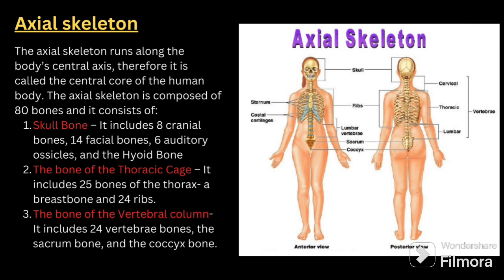The axial skeleton runs along the body's central axis, which is why it is called the central core of the human body. It is composed of 80 bones and consists of: skull bones — including eight cranial bones, 14 facial bones, six auditory ossicles, and the hyoid bone; the bones of the thoracic cage — including 25 bones of the thorax, a breastbone, and 24 ribs; and the bones of the vertebral column — including 24 vertebrae, the sacrum bone, and the coccyx bone.